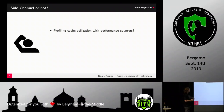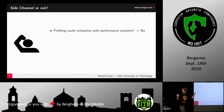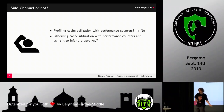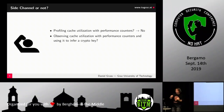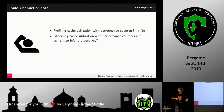Quick check: if I profile cache utilization with performance counters, that's not a side-channel — I just profile what I want. But if I use it to infer a crypto key, it becomes a side-channel attack. The inference step is what's important. Similarly, measuring memory access latency with Flush+Reload alone isn't a side-channel, but using it to infer keystroke timings makes it one.